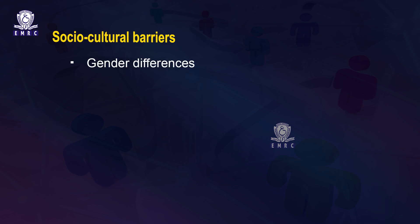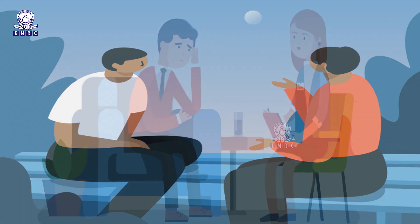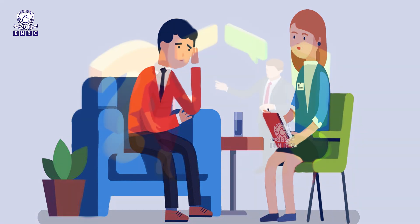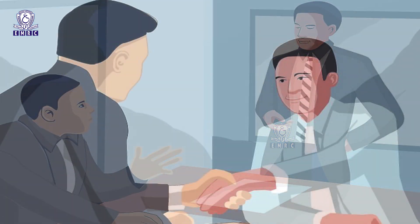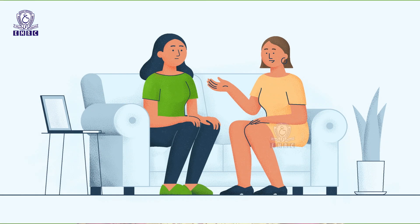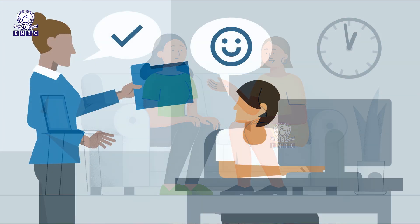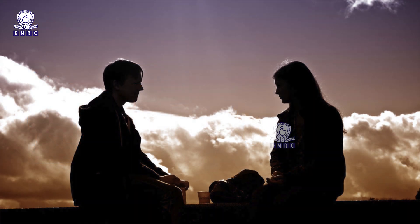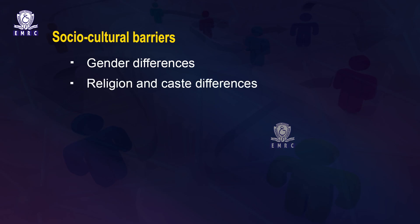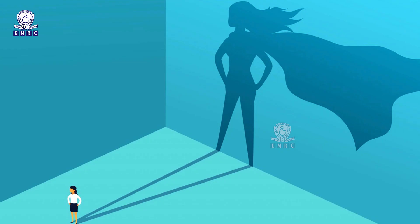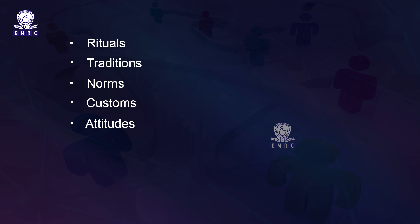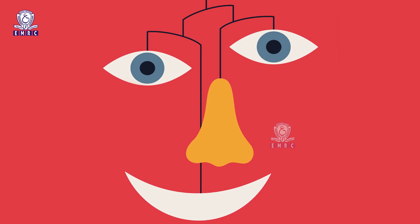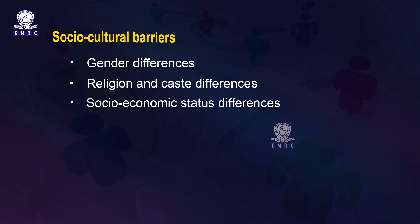Some factors that create cultural barriers include gender differences. Gender differences create communication barriers in some situations as men and women have different styles of communication. According to research, men usually engage in impersonal, work-oriented communication, whereas women engage in personal, relationship- and affect-oriented communication. Perception of messages also varies with gender. Religion and caste differences also impact the process of communication — the use of language concerning rituals, traditions, norms, customs, and attitudes differs with every culture, creating differences in perception.